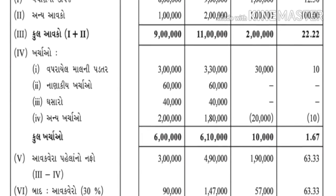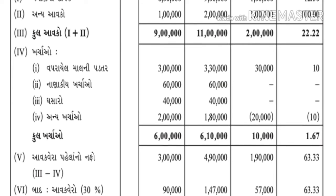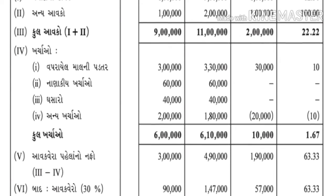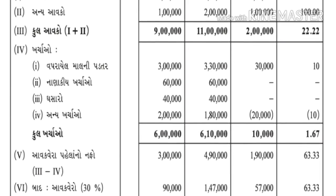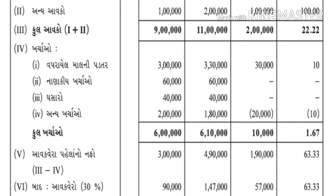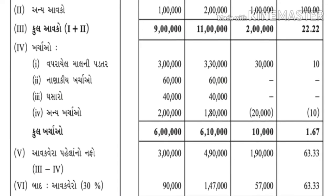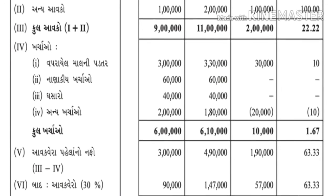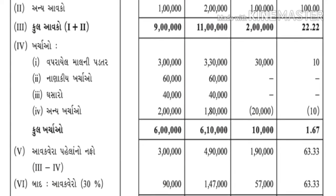ભાગ્યા - ત્રીજું ખાનું - 2 લાખ ભાગ્યા, ગુણ્યાં 100 - એટલે 10% - કેલ્ક્યુલેટરમાં 10 પૉઝિટિવ - પ્લસ - પ્લસ - પણ આ ઘટાડો છે, માઈનસ - એટલે ટકાવારી પણ માઈનસ. ખાસ યાદ રાખો: ઉતાવળે પ્લસ ન કરી દેતા.